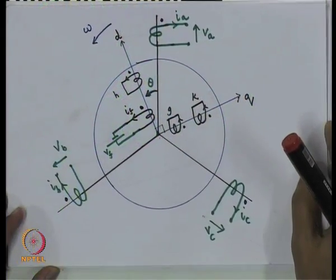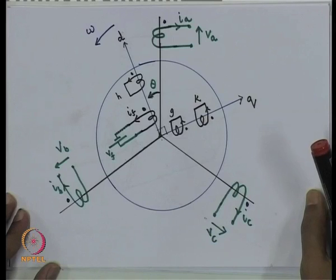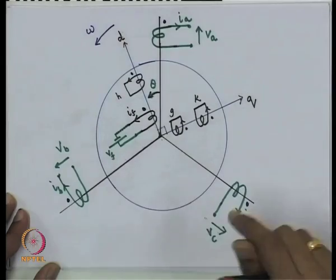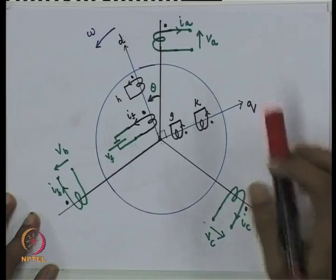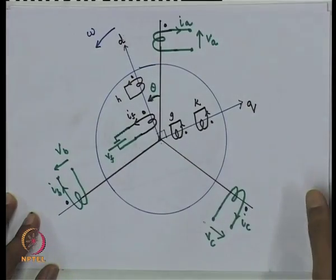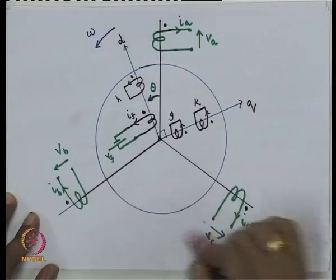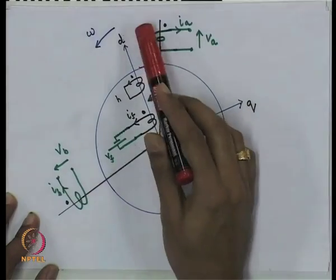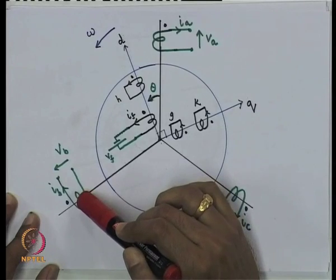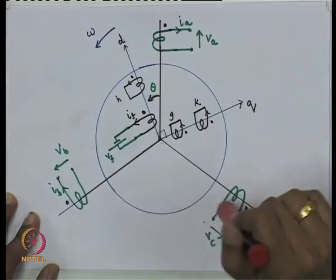We represent a synchronous machine schematically with three windings on the stator: the A winding, B winding, and C winding. We assume the rotor moves such that whatever happens in the A winding happens to B after some time — there is a phase lag of 120 degrees between B and A, and between C and B respectively.